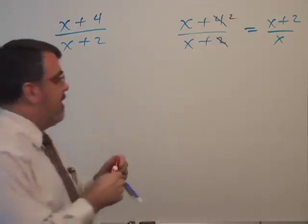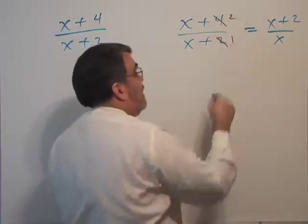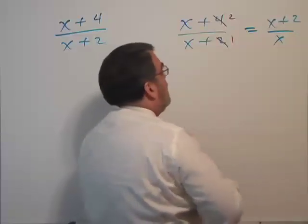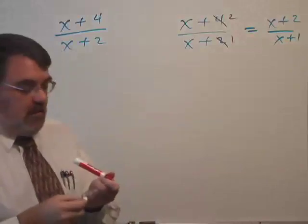They have made one extra mistake here because I guess if you cancel four over two, you should get two over one, shouldn't you? So that would make it x plus one. But in either case, they're both wrong.